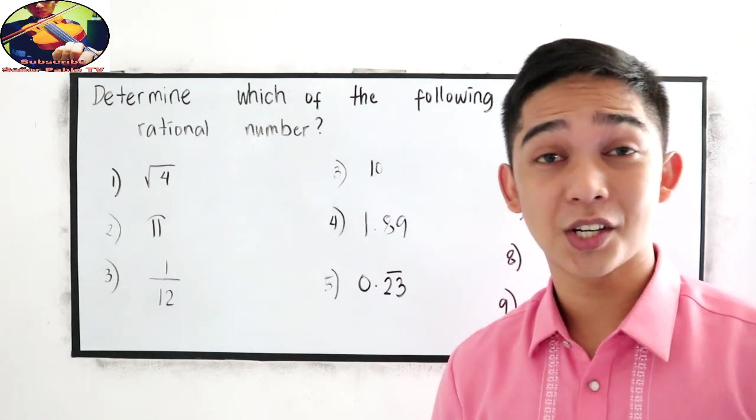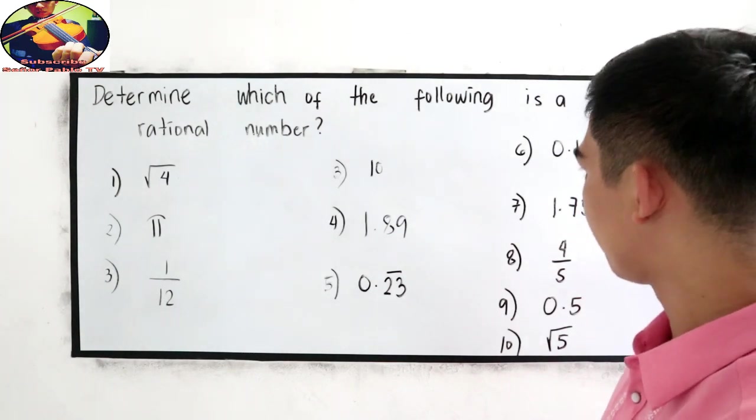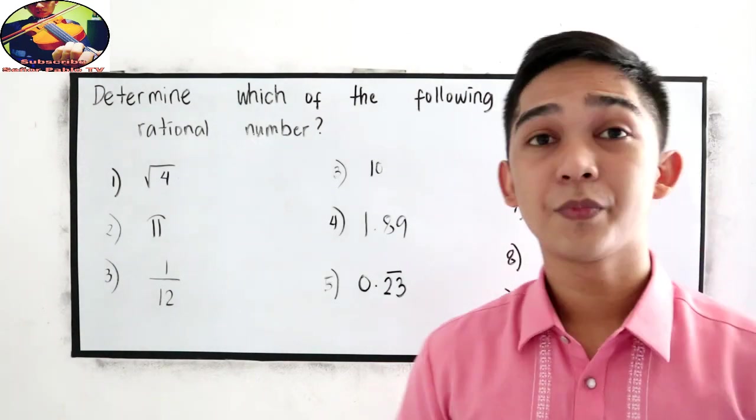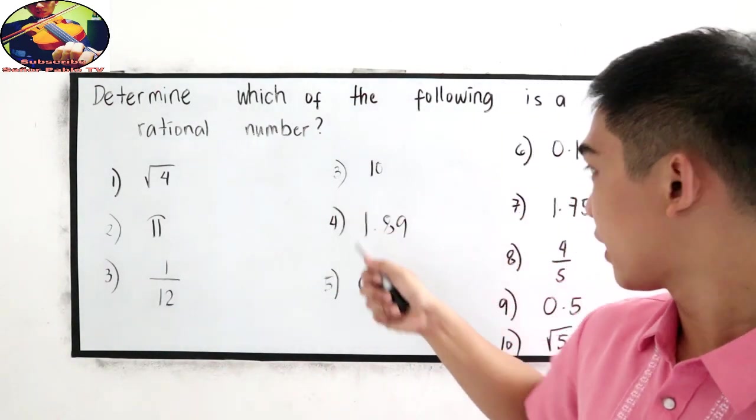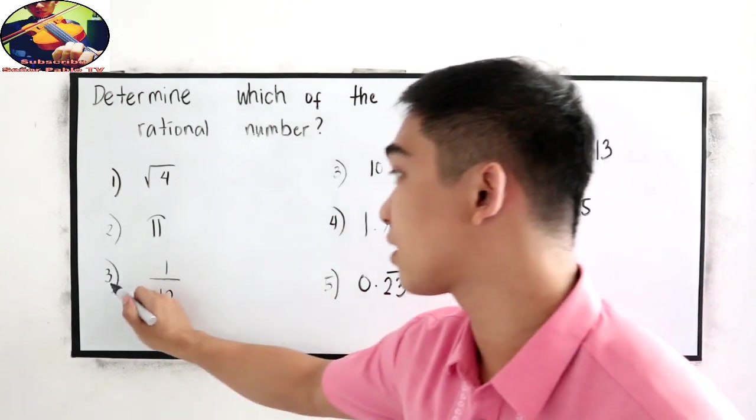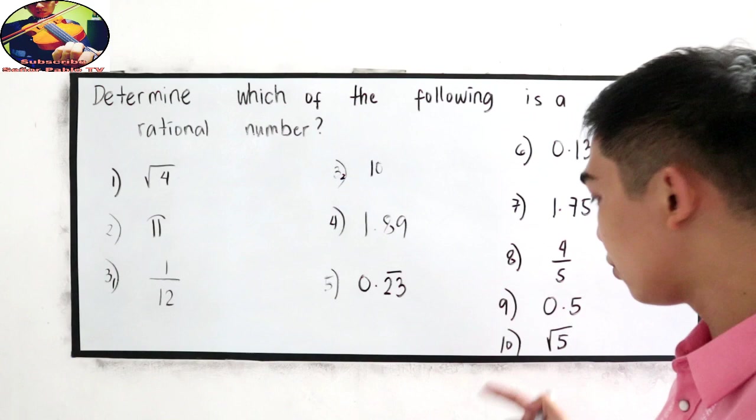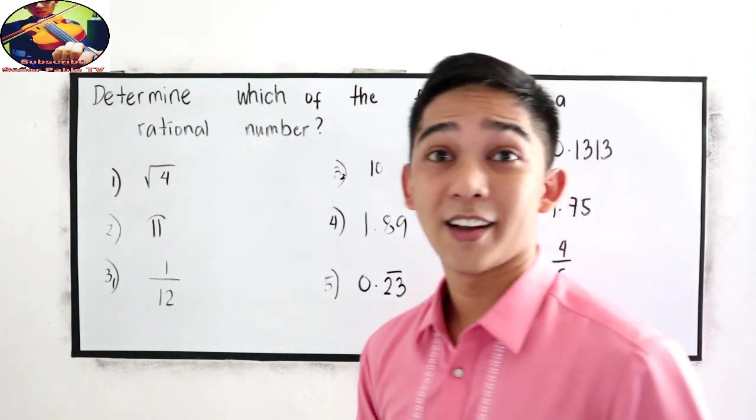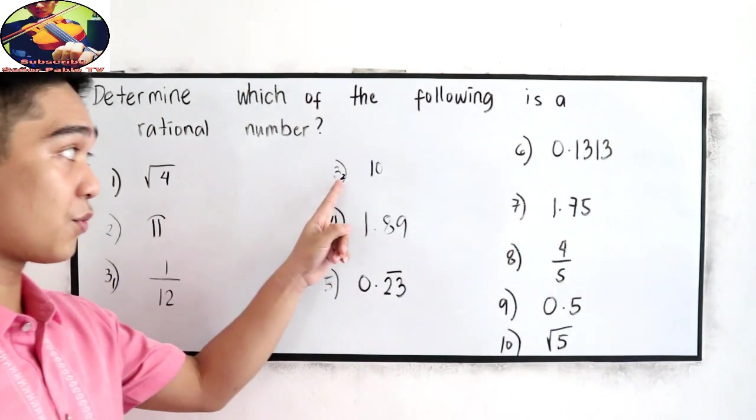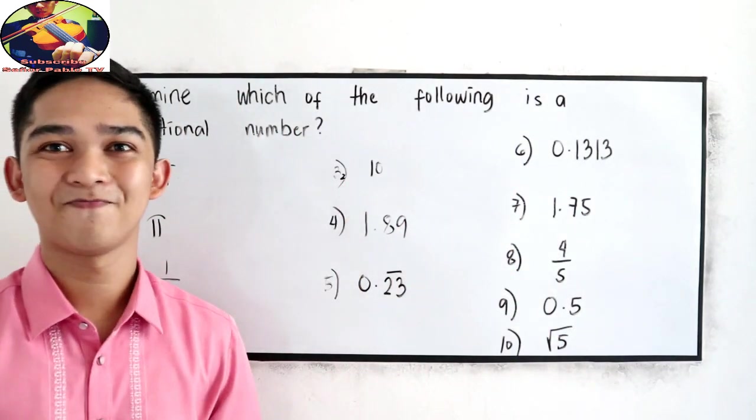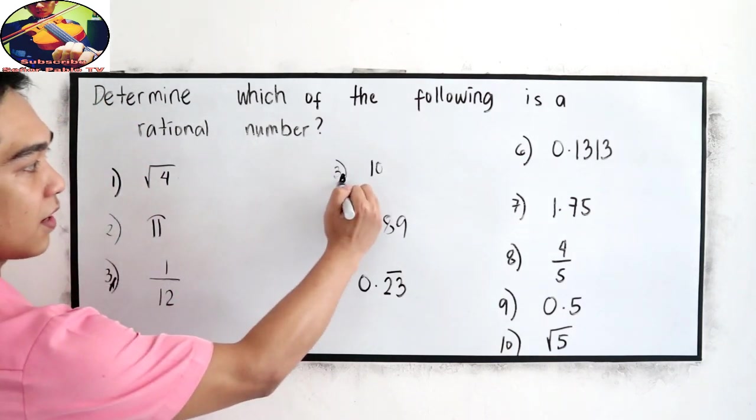Then you will answer 3 to 4. This, sorry for this, 3 and 3, so this will become 4, 3, let's say 3 sub 1, and 3 sub 2. You're going to answer 3 sub 2 to number 10. Again, I will answer numbers 1, 2, and 3. Then you're going to answer 3 sub 2 up to 10. Let's name it, 3a, and 3b.